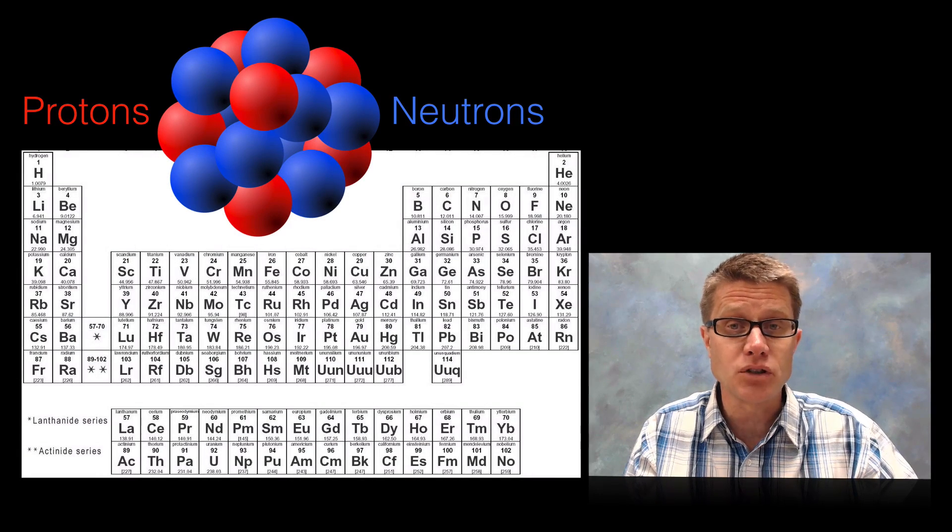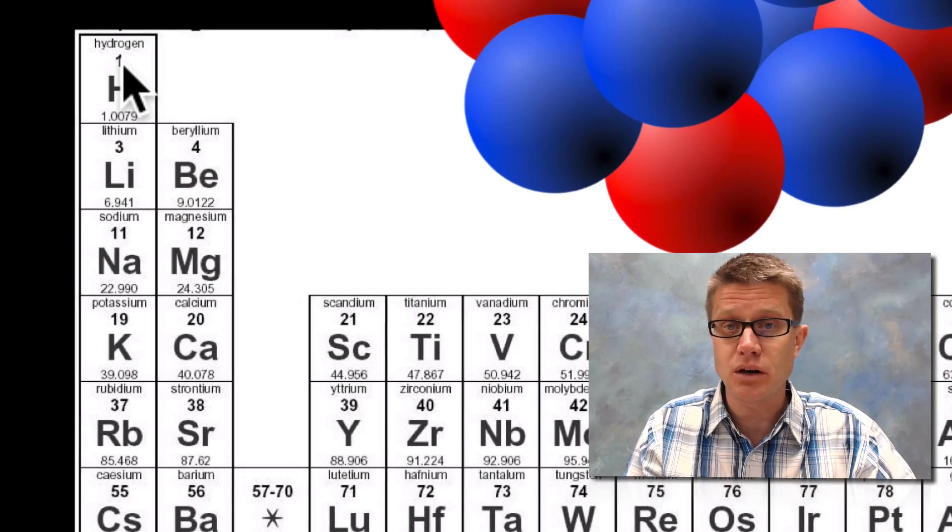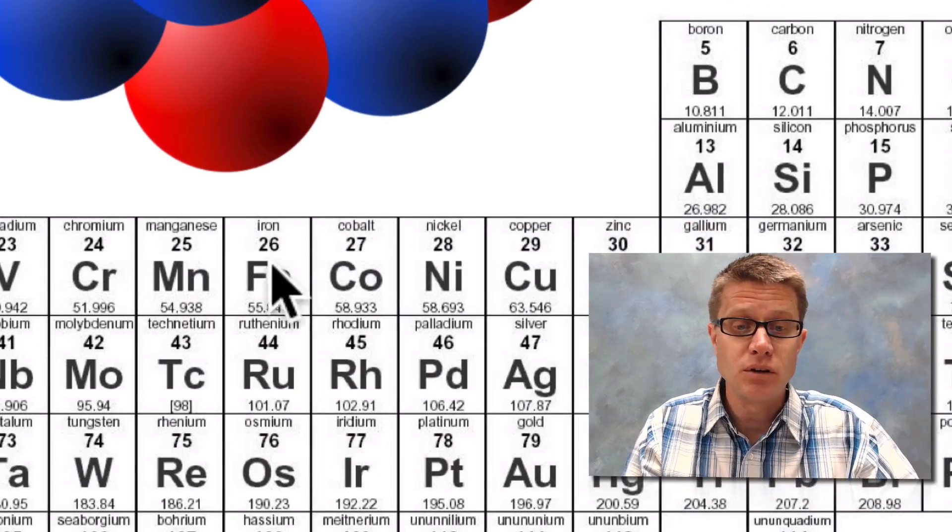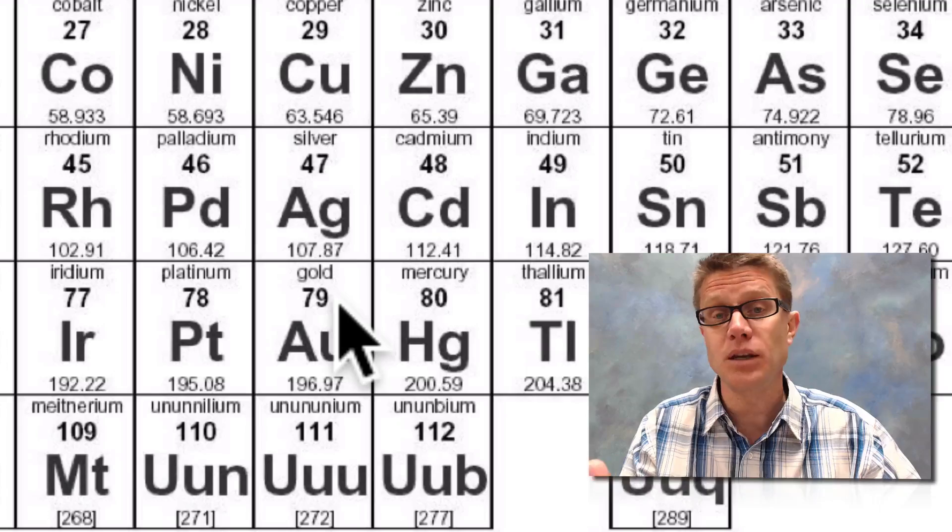If we organize the protons in a certain fashion we get the periodic table. And so we know that hydrogen has 1 proton, that is what the atomic number means. We know that iron has 26. We know that gold has 79. It tells us what the element is.